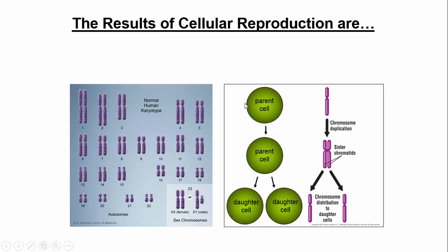In its simplest form, cell division works like this: you have a parent cell that divides into two daughter cells. Looking at the DNA, we start with one chromosome. Early in cell division, that chromosome is duplicated — now we have two copies called sister chromatids. The sister chromatids divide when the parent cell splits, and each becomes its own chromosome. So each daughter cell ends up with one chromosome, identical to the original. Note that in a human karyotype, this process happens to all 46 chromosomes simultaneously.